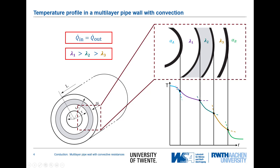The same applies not only to the inside but also to the outside. Remember that the thermal conductivity of gases and liquids is usually smaller than that of solids. As such, the temperature gradient on the liquid side is higher than on the solid side, and the same applies to the outside as well.